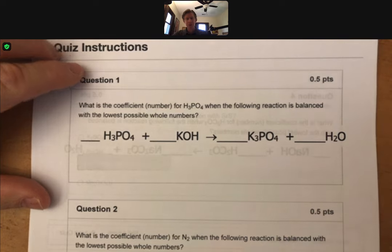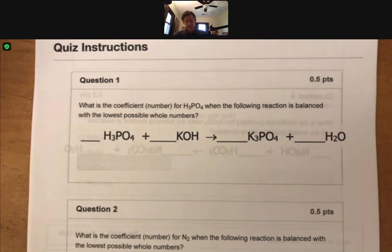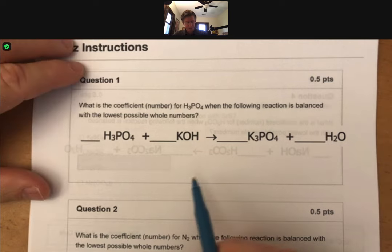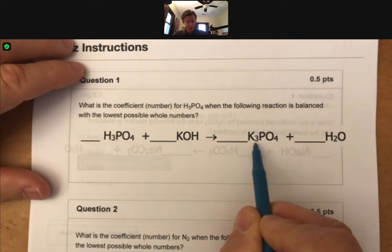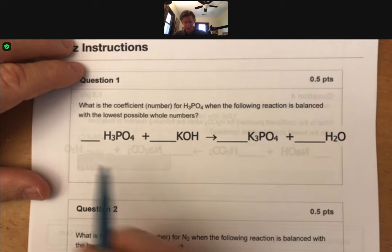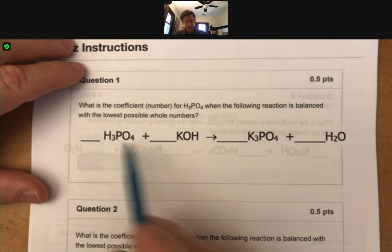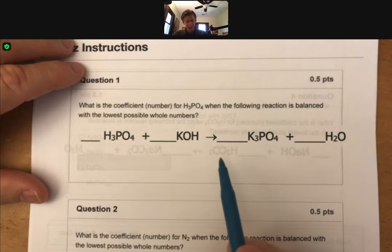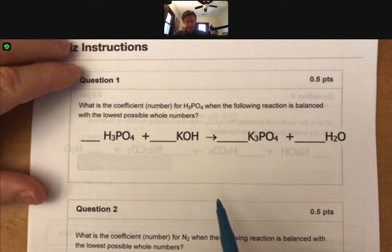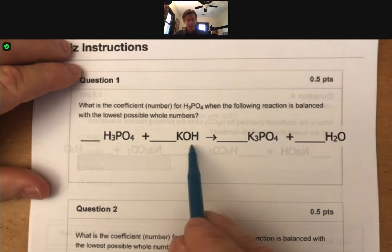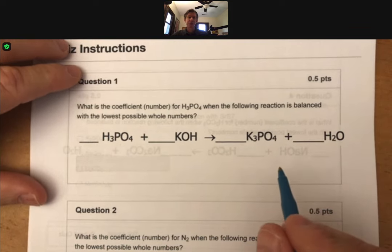And for this one, according to the guidelines I do in my class, you want to put a 1 in front of the most complex formula. And the most complex formula is going to be the one with the most kinds of atoms. I have three kinds of atoms and three kinds of atoms, and then the most number of atoms. And again, we have a tie here. So the other thing I recognize about this is this is a double replacement reaction.